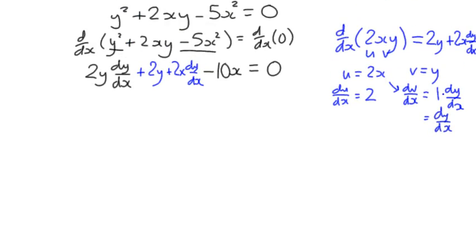I can then continue as I have done before. We keep any terms that contain dy/dx on the left-hand side. So that's 2y dy/dx plus 2x dy/dx equals, and the other terms appear on the right-hand side: 10x minus 2y.